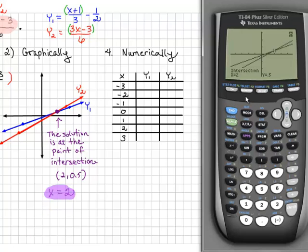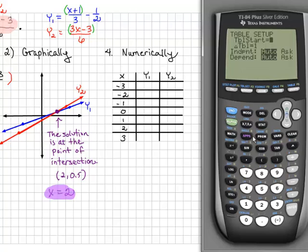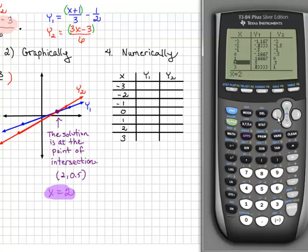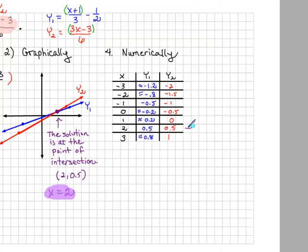To solve the system numerically means we need to make a table of values, so we go back to our calculator. Press 2nd window for table set. Put table start at negative 3 and increment by 1 to correspond with the table in front of us. Go to 2nd graph which is table, and we can see the y1 and y2 values that correspond for each x. When we scroll down to x equals 2, we see that y1 and y2 have exactly the same y value, so we know that x equals 2 is the solution. The solution occurs where y1 and y2 are equal to each other.